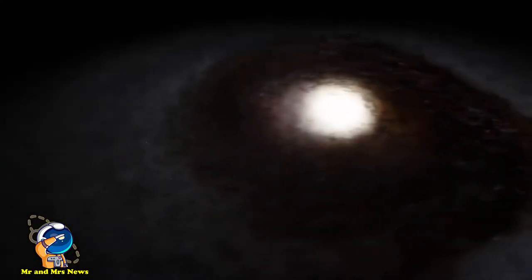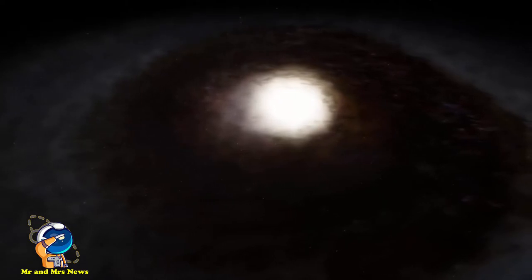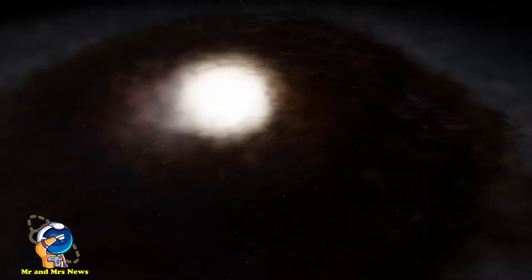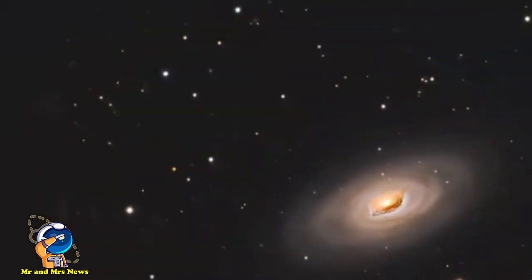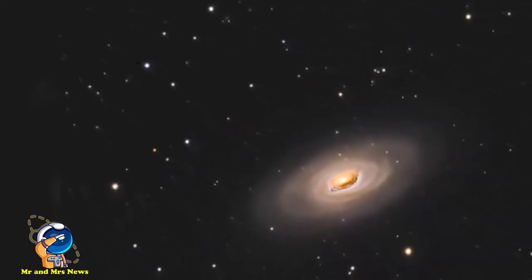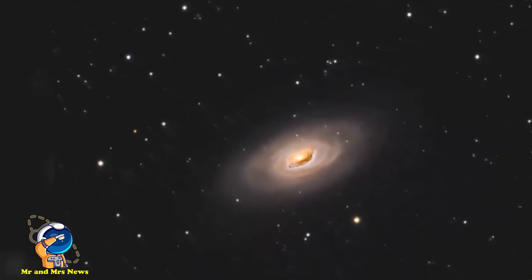Galaksi mata hitam ini atau Messier 64 mempunyai magnitudo tampak 9,36 kemudian terletak pada jarak 24 juta tahun cahaya dari bumi. Messier 64 ini menempati area seluas 10,7 x 5,128 menit busur, berdasarkan diameter linier adalah 70 ribu tahun cahaya.